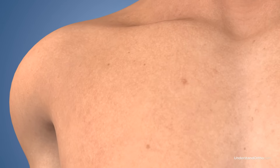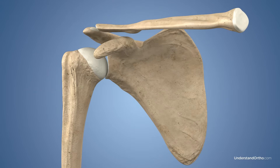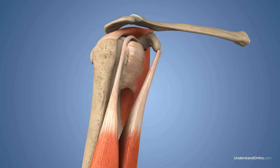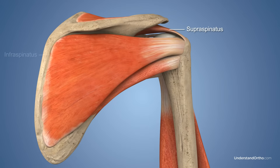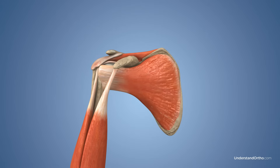There are three bones involved in the shoulder: the humerus, the scapula, and the clavicle. The rotator cuff is made up of a group of four tendons and muscles that surround the shoulder joint. These muscles are the subscapularis, the supraspinatus, the infraspinatus, and the teres minor, and together they work to stabilize the joint and move the arm. A fluid-filled sac or bursa protects the tendons of the rotator cuff and allows them to slide smoothly as the arm moves.